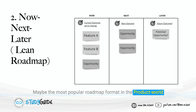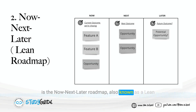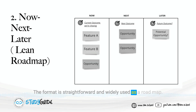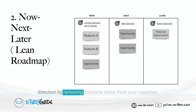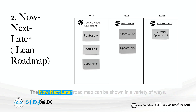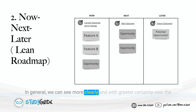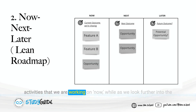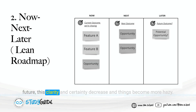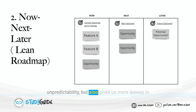Maybe the most popular roadmap format in the product world is the now-next-later roadmap, also known as a lean roadmap, but it's not always the most widely used. The format is straightforward and widely used. Timeline roadmaps are fraught with problems, but you can avoid them while still providing clarity on product direction by removing concrete dates from your roadmap. Tasks are typically broken down into discrete time frames — now, next, and later. In general, we can see more clearly and with greater certainty over the activities we are working on now, while as we look further into the future, this clarity and certainty decrease and things become more hazy. This not only better illustrates the product's inherent unpredictability, but also gives us more leeway in determining how we ultimately achieve our goals.